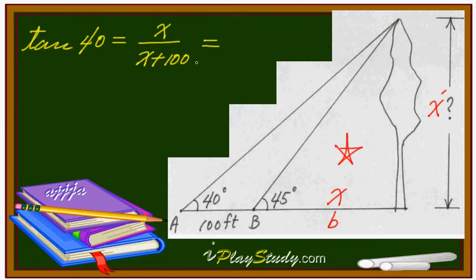Since it's 40 degrees, we can't figure it out by hand, so we have to use the calculator. Tangent of 40 is 0.839.